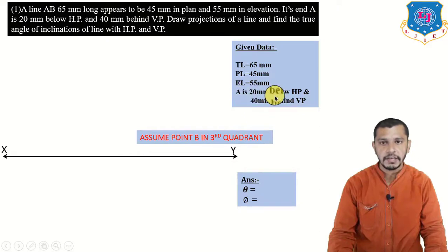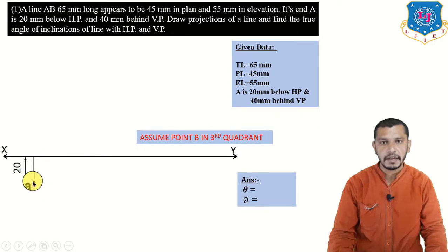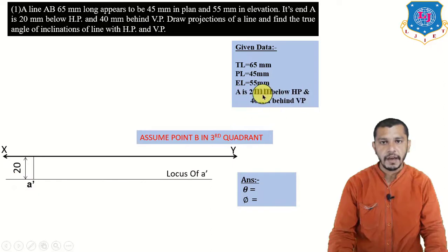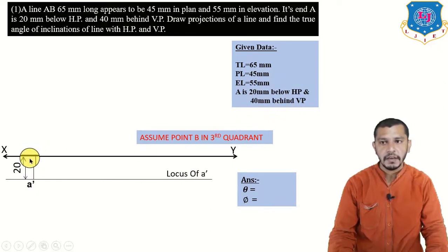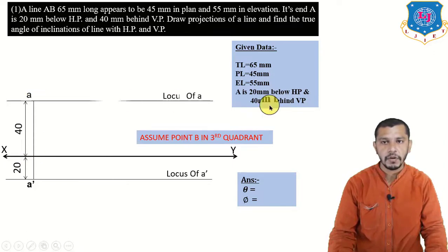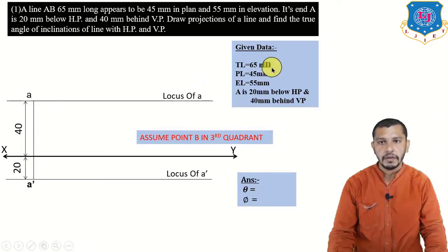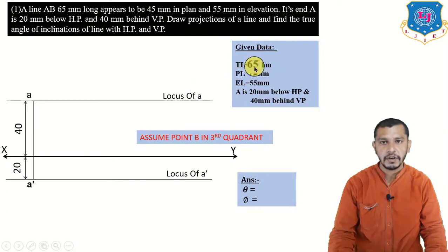A is 20 mm below HP, so 20 mm below the XY reference line we get the elevation of point A — this is the locus of A-dash. A is 40 mm behind VP, so 40 mm above the XY reference line we get the plan of point A — this is the locus of A. The other given data is true length, plan length, and elevation length.